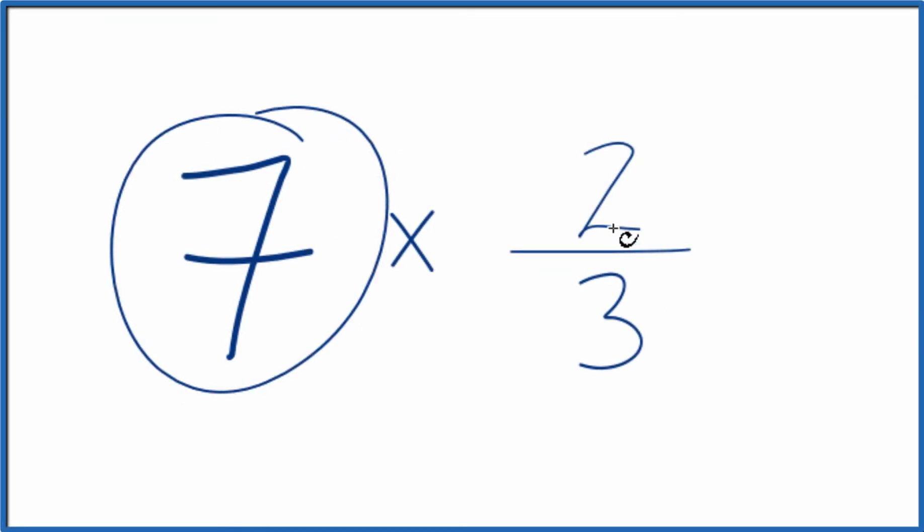So let's multiply 7 times 2 thirds. Here's how you could do it. First off, you could just add 2 thirds up 7 times. That would give you the answer to 7 times 2 thirds.